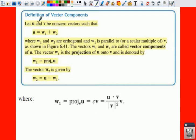These are very useful when we're going to have to find the force required to keep something on a ramp. If we have two vectors U and V such that U equals W sub 1 plus W sub 2, that means this would be your force vector.